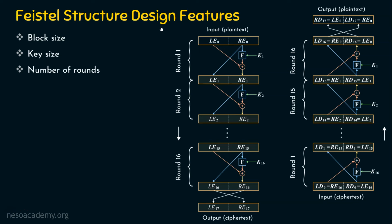The third design feature is the number of rounds. One round is definitely not sufficient for better security — it can be easily broken. If there are 16 rounds in encryption, there are also 16 rounds in decryption, because this is a symmetric encryption model where the same keys are used for both. The real security relies on the number of rounds: more rounds means greater security.